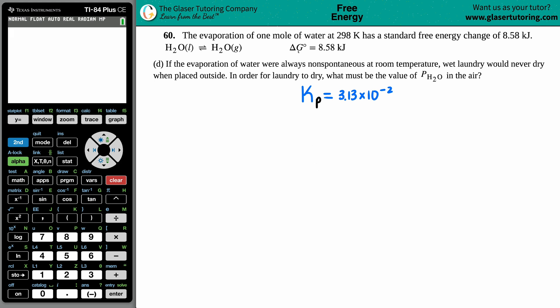Number 60: The evaporation of one mole of water at 298 kelvin has a standard free energy change of 8.58 kilojoules, and it's represented by this equation. They say that the delta G naught was 8.58 kilojoules.